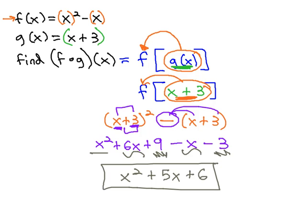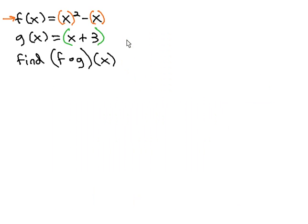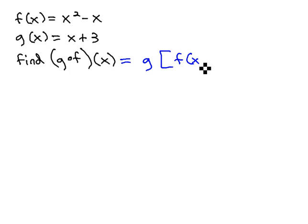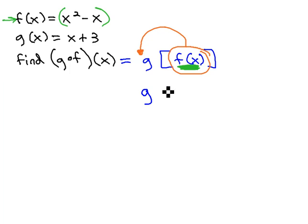We can also do this in the opposite order. Instead of finding f of g of x, if we switch the order and made it into g of f of x, we get a whole new problem. In fact, the answer will very rarely be the same when we switch the order, because now we have g on the outside with f of x inside of it. In other words, we want to take this entire f of x function and plug it into the g function. Well, what is f of x? F of x is this x squared minus x, and that's what's going to go into this g function.